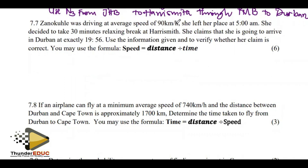Zanokulhle was driving at an average speed of 90 kilometers per hour. She left her place at 5 a.m. and decided to take a 30-minute relaxing break at Harry Smith. She claims she is going to arrive in Deben at exactly 19:56. Use the information given to verify whether her claim is correct. You may use the formula: speed equals distance over time, so time equals distance divided by speed.